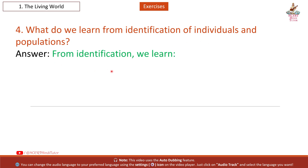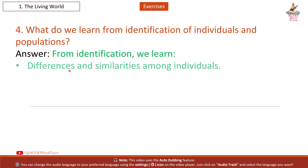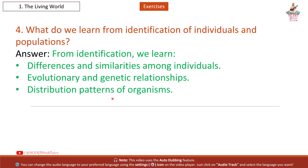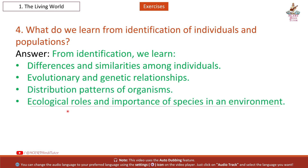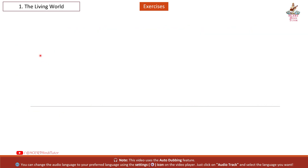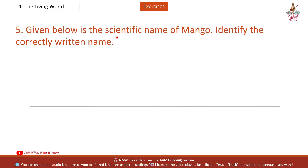Question 4: What do we learn from identification of individuals and populations? Answer: From identification we learn differences and similarities among individuals, evolutionary and genetic relationships, distribution patterns of organisms, ecological roles and importance of species in an environment, and it helps in conservation and resource management.